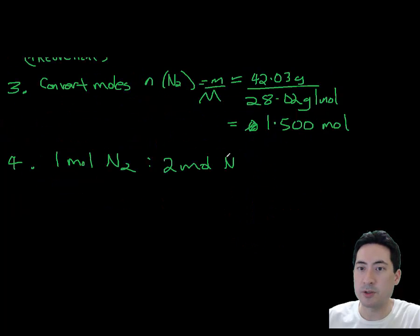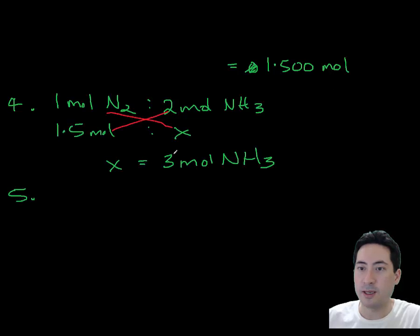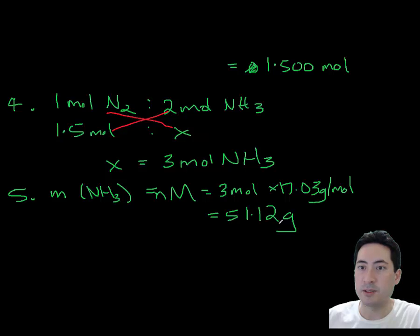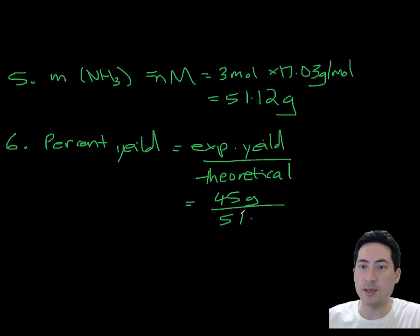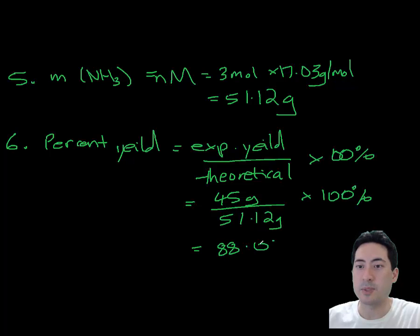What we should have got is 3 moles of ammonia, and the mass of that is 51 grams. We got 45, so you divide 45 by 51, and then you get your final answer as 88%.